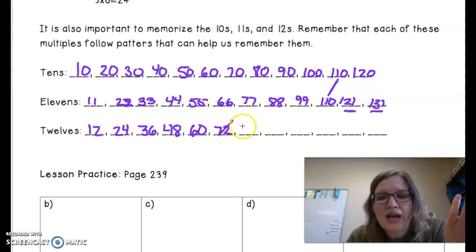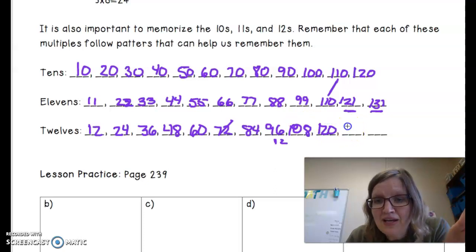12 times 7 is 84. 12 times 8 is 96. 12 times 9, I have to think about this one. I can just add 12, it is 108. 12 times 10 is 120. 12 times 11 is 132.